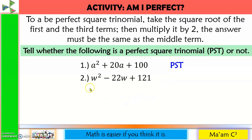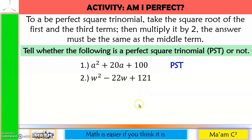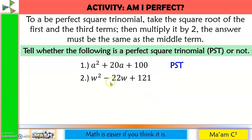Number 2: the square root of w squared is w; the square root of 121 is 11. w times 11 is 11w, times 2 is 22w — and that is the middle term. So this is a PST.